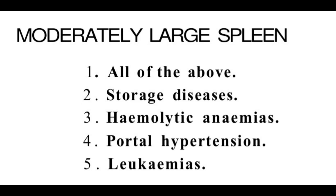Other conditions such as chronic myeloid leukemia, myelofibrosis, malaria, kala-azar, Gaucher disease, and lymphoma — these are conditions in which the spleen will either be mildly enlarged, moderately enlarged, or sometimes appear as hugely enlarged spleen.